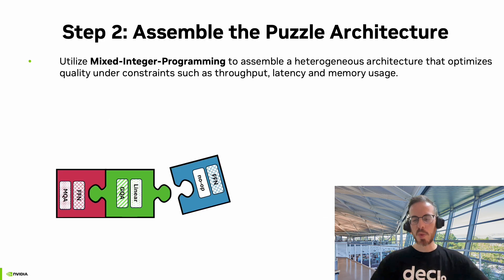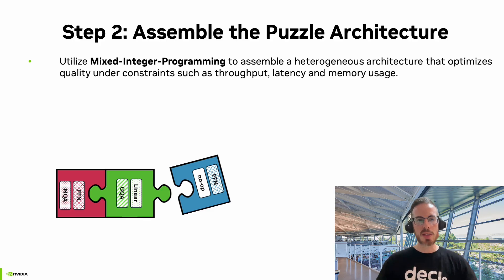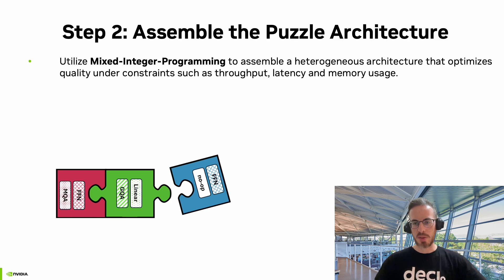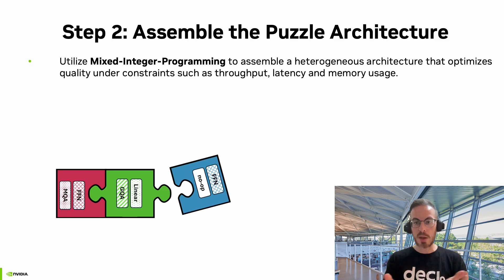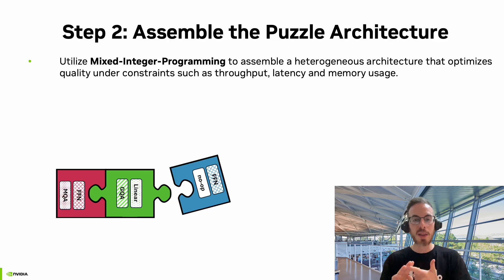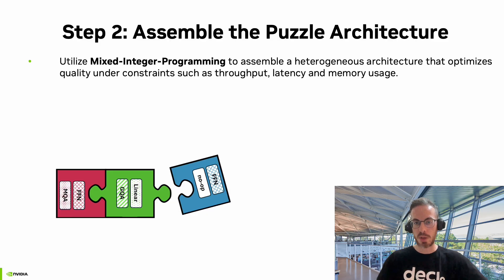In the second step, we assemble the puzzle architecture. Our search algorithm utilizes mixed-integer programming to assemble a heterogeneous architecture, where each layer can be different from all the others. We try to optimize the overall model quality under deployment constraints that can be throughput, latency, or memory, or all of them at once.